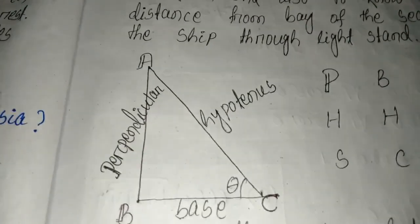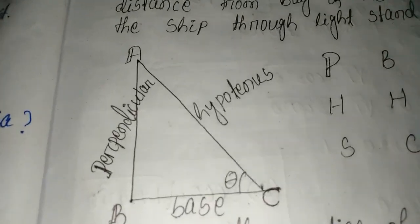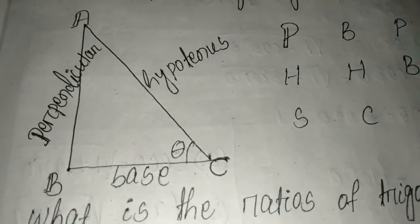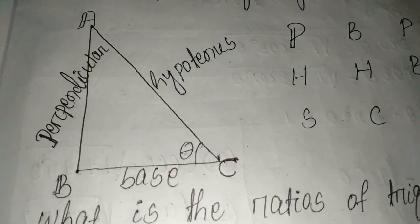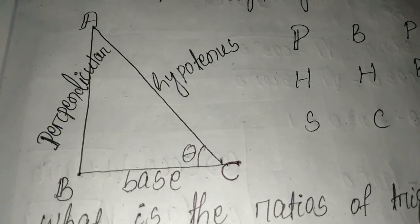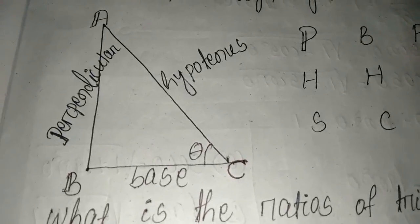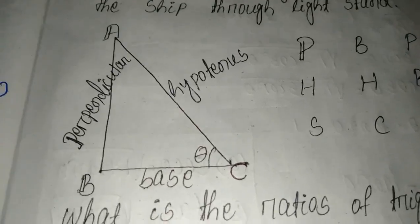In a right angle triangle ABC, AB is the perpendicular, BC is the base, and AC is the hypotenuse.